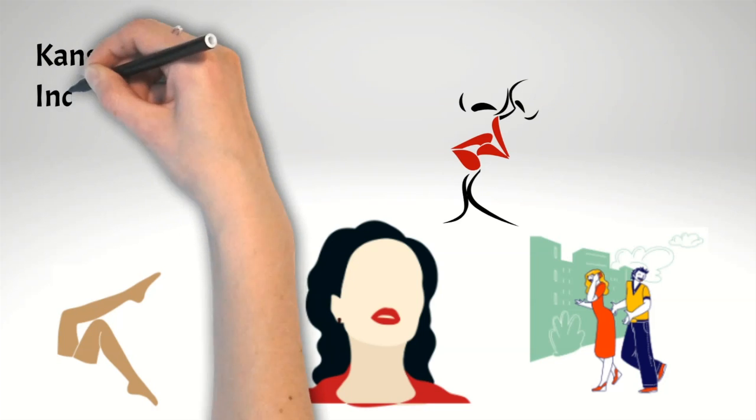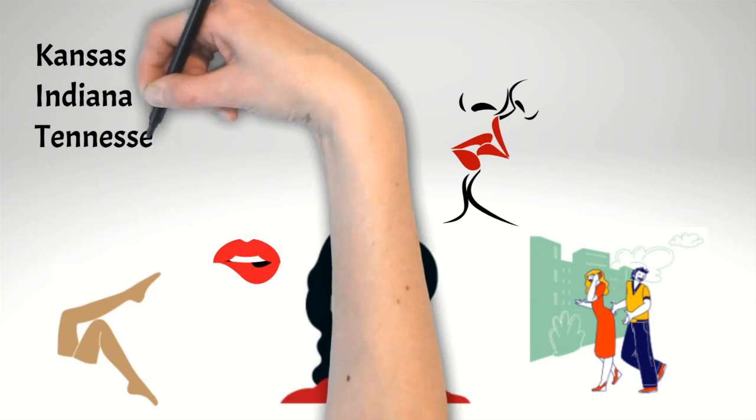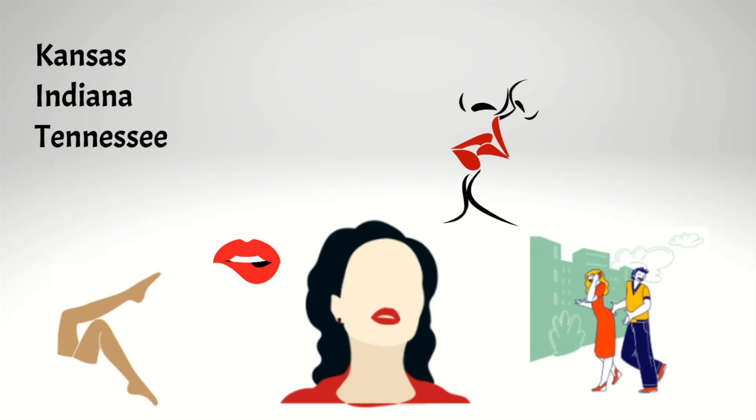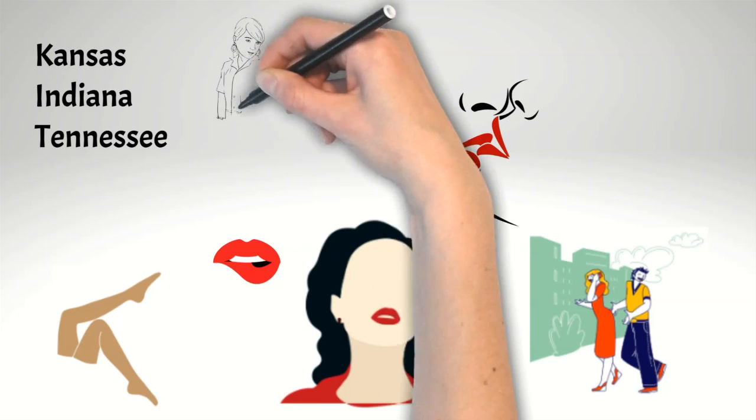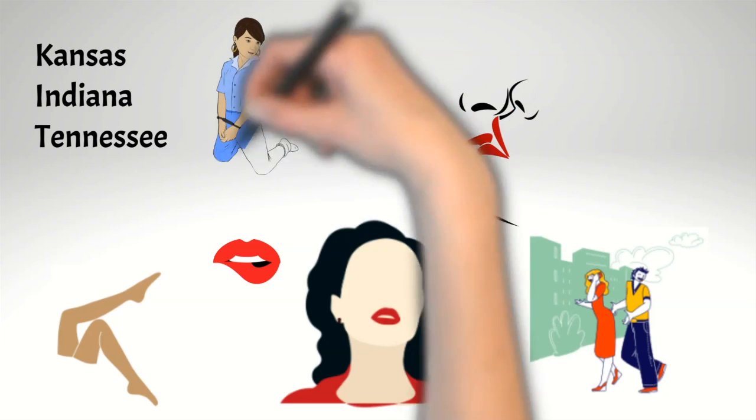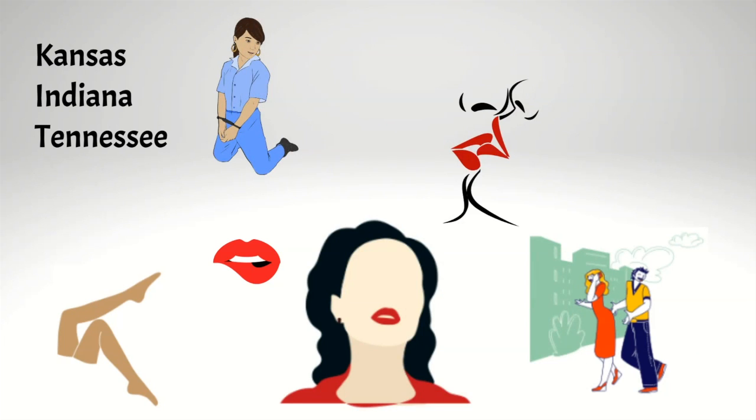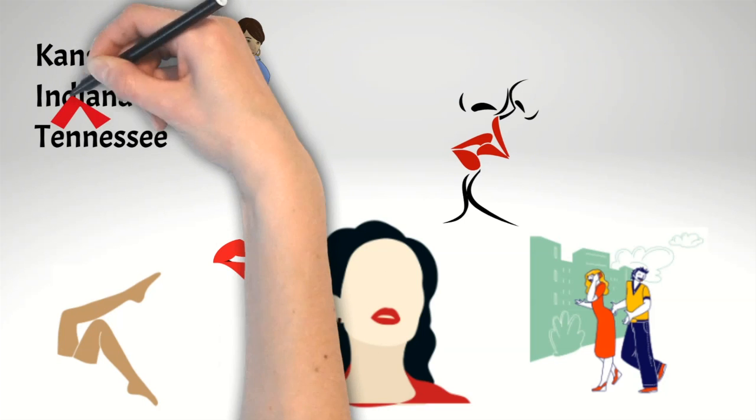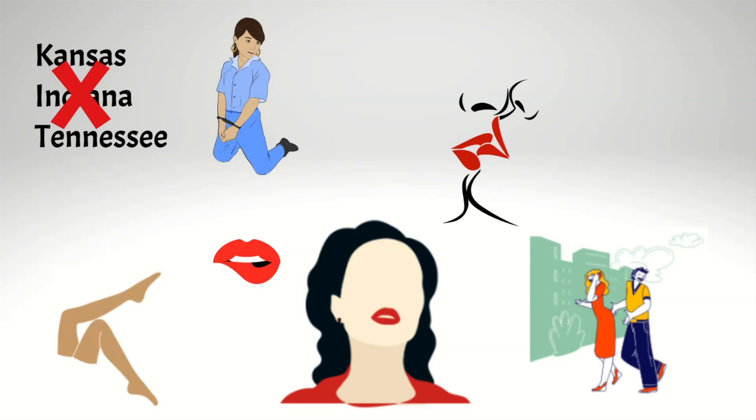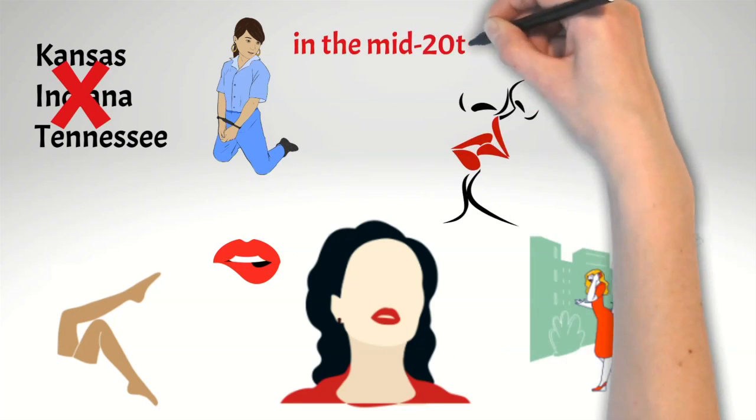As a result, several states, including Kansas, Indiana, and Tennessee, passed laws prohibiting women from wearing lipstick in public. In some cases, women who were caught wearing red lipstick could be fined or even arrested. These laws were eventually overturned, as attitudes towards makeup and women's fashion began to shift in the mid-20th century.